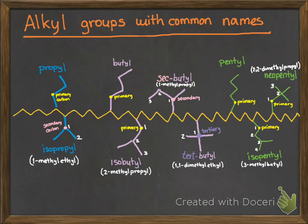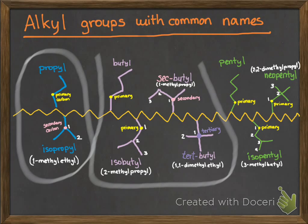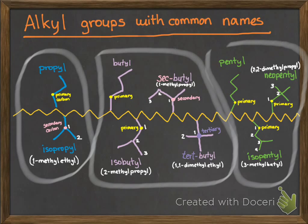The alkyl groups with common names. We have two that come from propyl, then we have four that come from butyl and we have three that come from pentyl. In white we have the IUPAC name, in colors the common names.